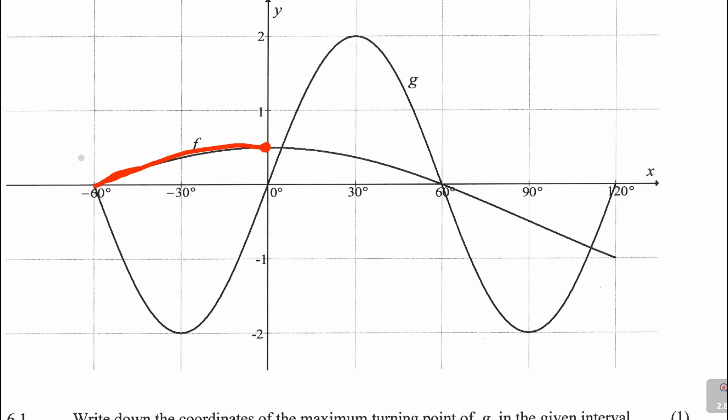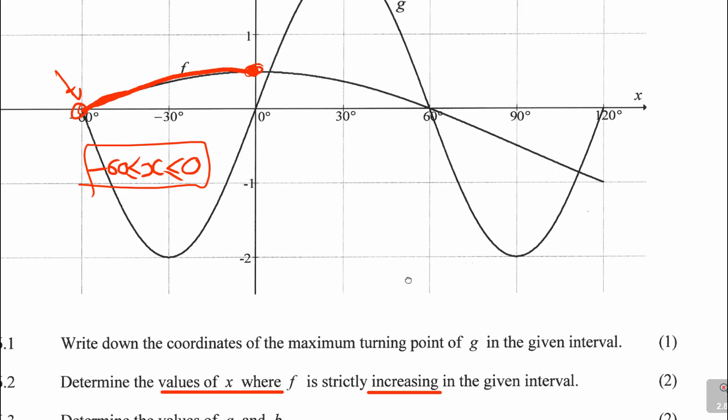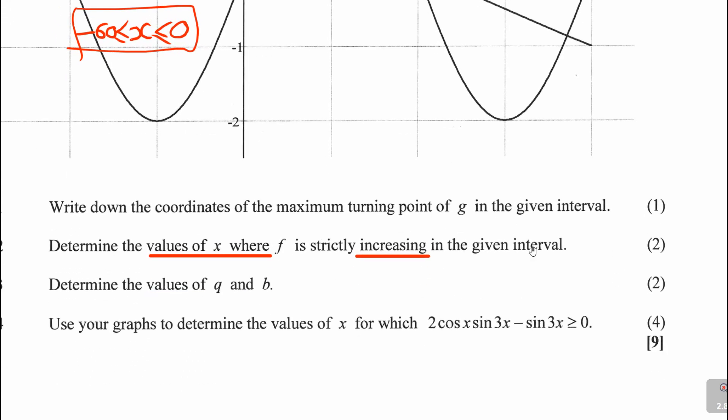They're asking where is f increasing. There is the increasing for f until somewhere there. Where is it from? The values of x starting from that point, which is -60°, and ending at zero. Then you write: -60° ≤ x ≤ 0°. We are including the -60 and the zero.